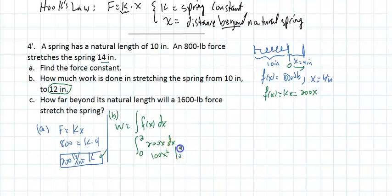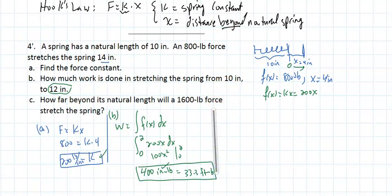You can convert to feet by dividing by 12, getting 33⅓ foot-pounds, though you don't have to. Part c asks: How far beyond the natural length will a 1600-pound force stretch the spring?